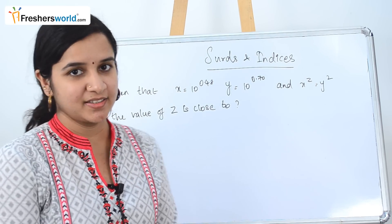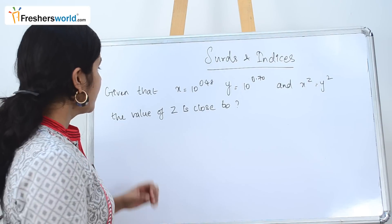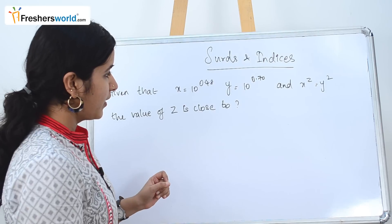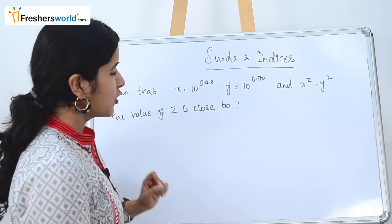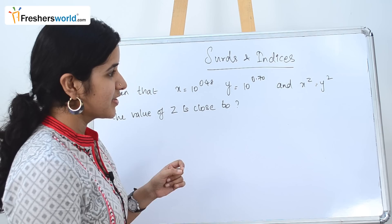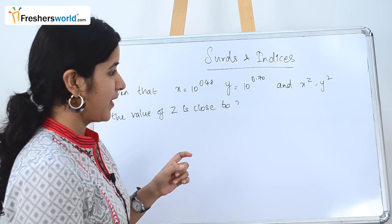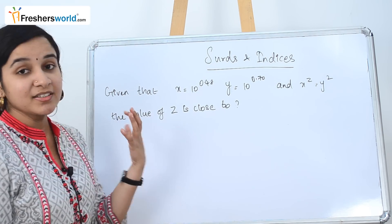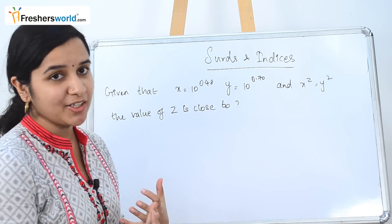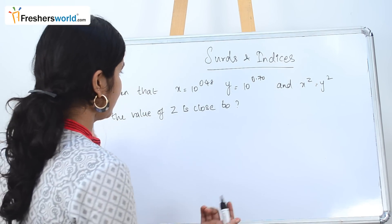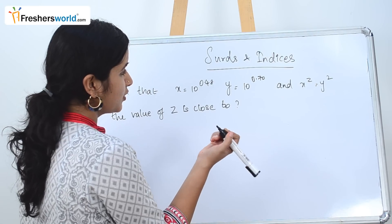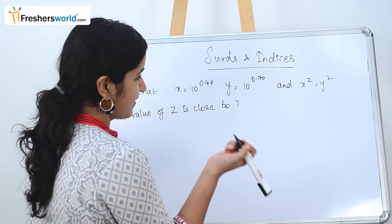Let's get started. The given question is: x is equal to 10.48 and y is equal to 10.70, and x power z is equal to y square. Then the value of z is close to. Let's use the values that they have given here — x is equal to 10.48 and y is equal to 10.70.